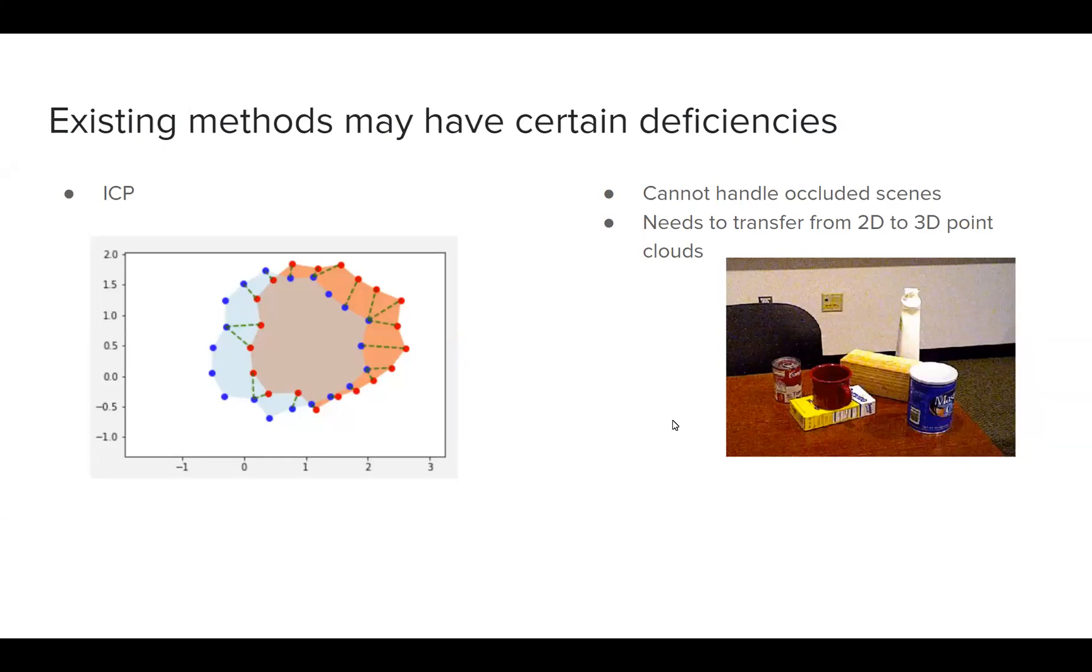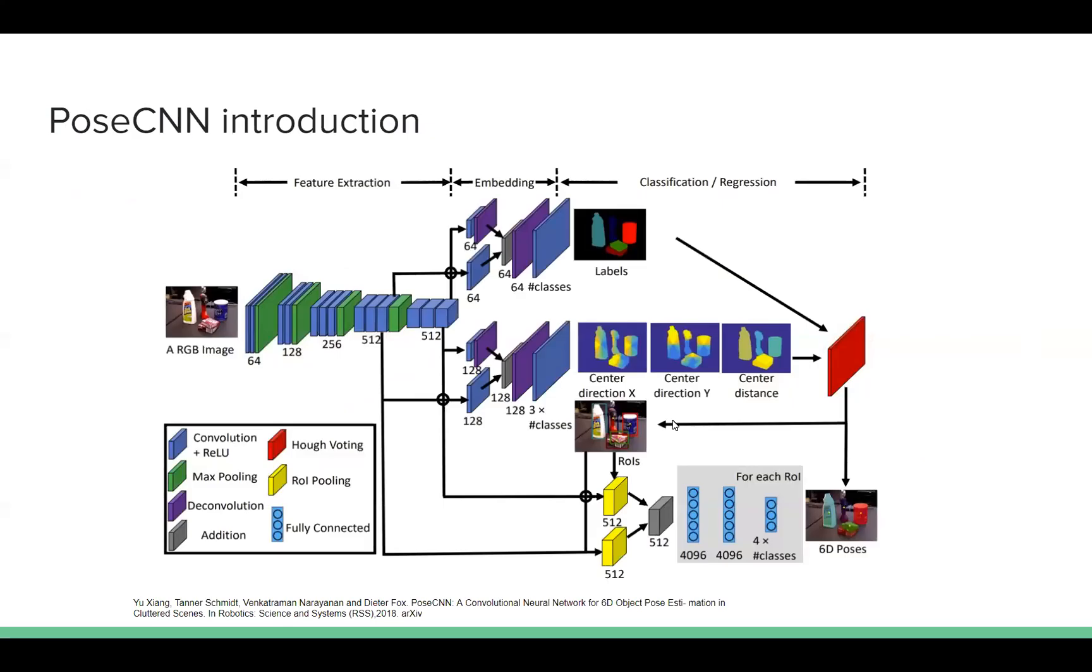PoseCNN turns out to be a pretty robust method to handle these problems. It is a convolutional neural network that can learn the 6D poses of objects from RGB pictures.